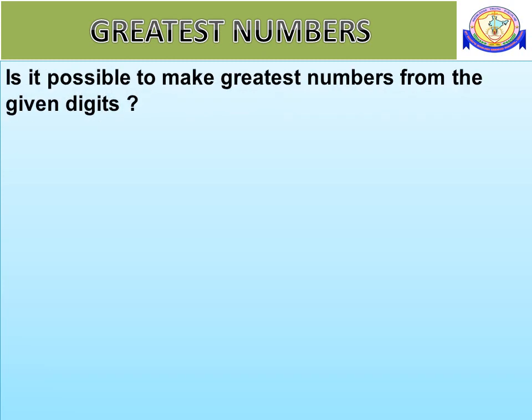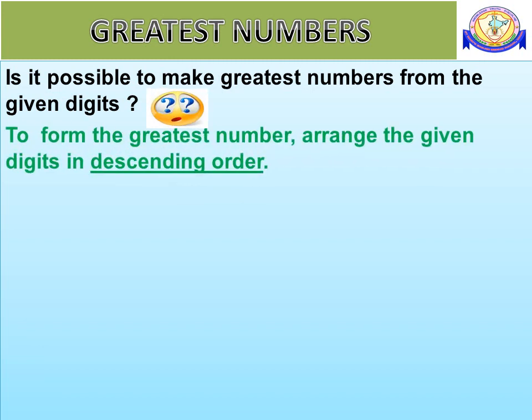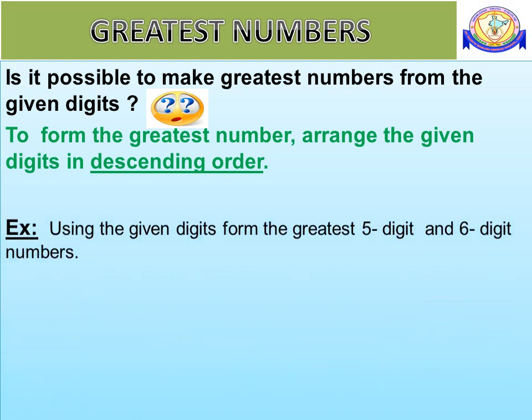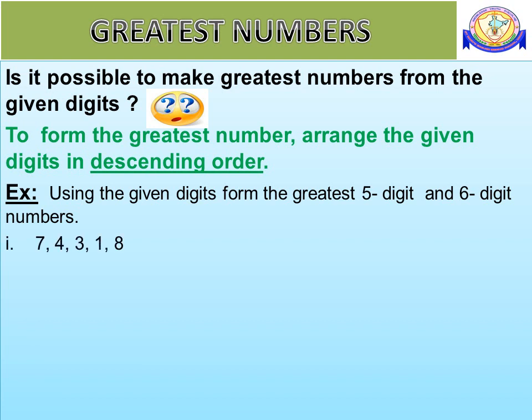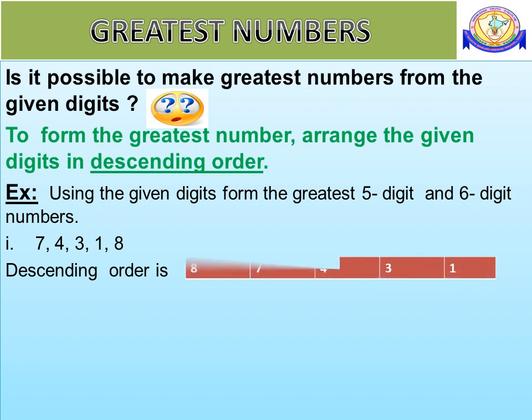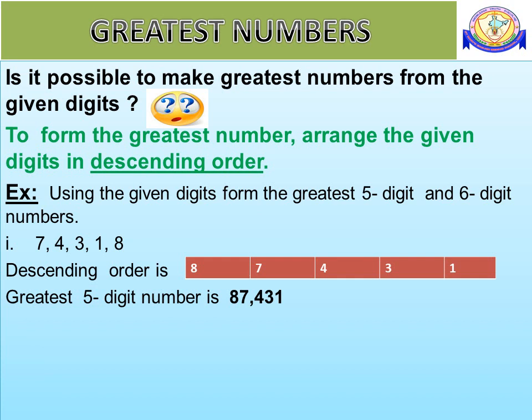Is it possible to make the greatest number from the given digits? To form the greatest number, arrange the given digits in descending order, that is, bigger to smaller. Consider the digits 7, 4, 3, 1, 8. Descending order is 8, 7, 4, 3, 1. Therefore, the greatest 5-digit number is 87,431.